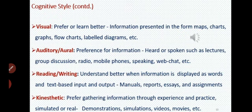Auditory — जहां पर हम बच्चे को कुछ सुनाते हैं, जैसे radio, group discussion, mobile phones, speaking — जहां पर बच्चे कुछ सुनकर सीखते हैं. Reading and writing — जहां बच्चे written text को पढ़ते और लिखते हैं, जैसे essays, assignments, manuals, reports. Kinesthetic — gathering information through experience and practice, simulated and real environments में. बच्चों को experiences देते हैं जो वो खुद practice करके सीखते हैं — videos, movies, simulations, demonstrations के through.